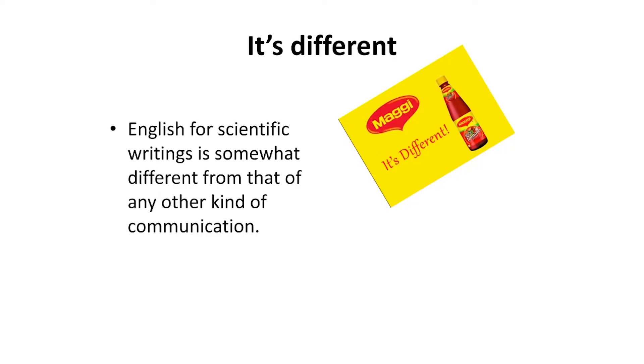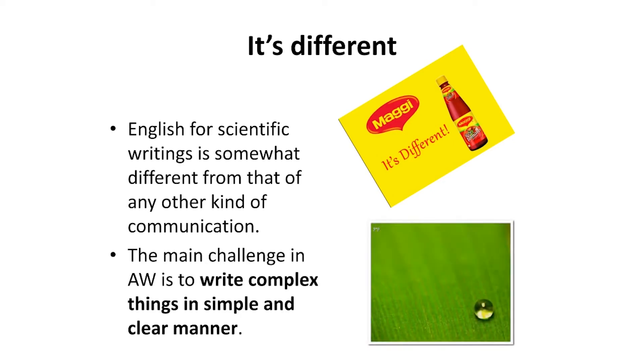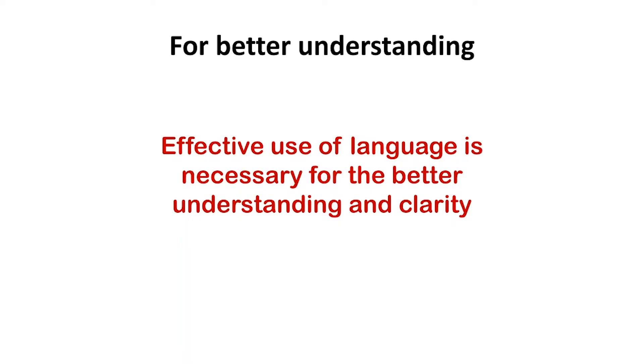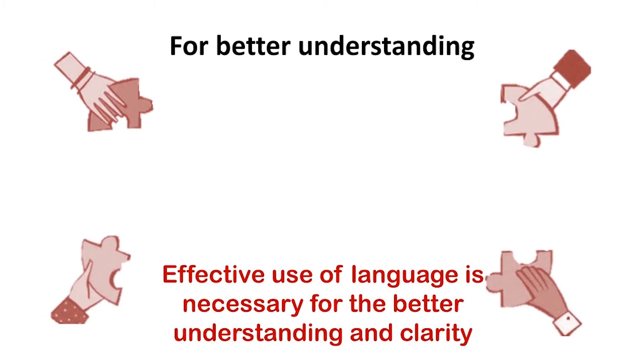It's different in academic writing. Using English in academic writing is different. Why? The use of English for scientific writing, for academic writing, is somewhat different from that of any other kind of communication. The main challenge in academic writing is to write complex things in the most simple way and the most clear way. You will have to inculcate the simplicity. You will have to simplify things with the utmost clarity in academic writing for effective communication. You must have a good command on the language for scientific communication, for academic communication. For better understanding, effective use of language is required for better understanding and clarity of the topic being addressed.